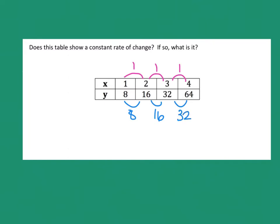So I can tell on this, if I were to make my fractions, 8 over 1, 16 over 1, 32 over 1, these are not the same. So this one is no. There is no constant rate of change.